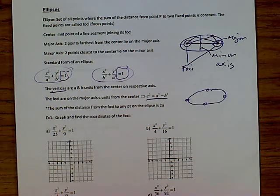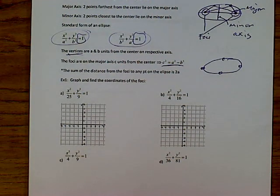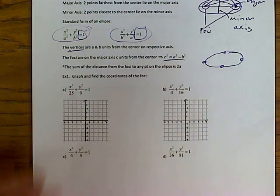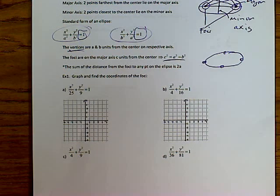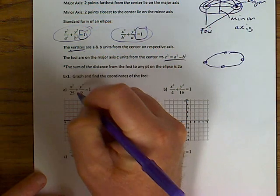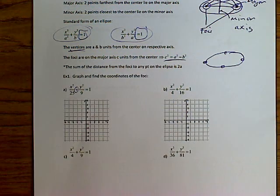Let's see what we can do here right off the bat. Letter A, example one — this says graph and find the coordinates of the foci. First thing you want to determine is what shape do you have. One of the keys is that you have a plus in the middle.